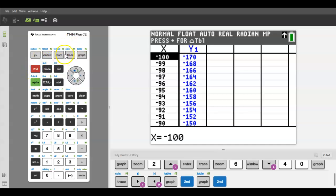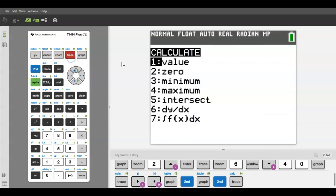Let's talk about calculate for just a second. That's second trace. You can calculate any value, find the zeros (also known as the x-intercepts), the minimum, the maximum, and an intersection of graphs. This is calculus stuff, so we're not going to talk about that in this video. And that's your quick overview of the graphing features of the graphing calculator.